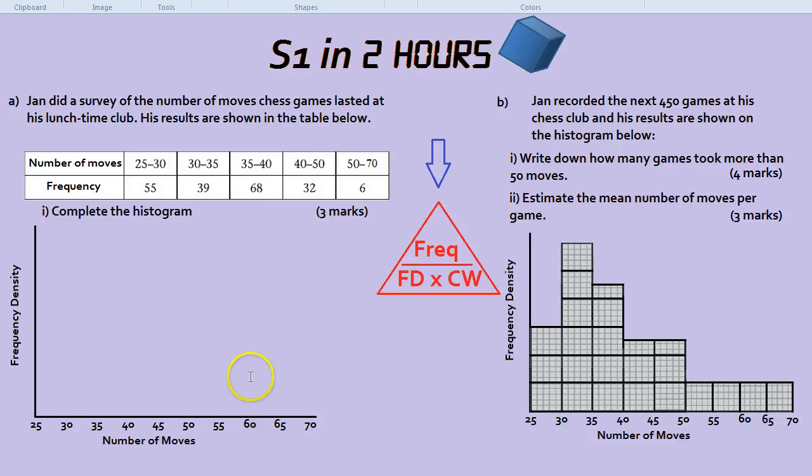So let's see how that would work. If we cover up frequency density, what do we have to do with the triangle? If we cover it up, we're left with frequency divided by class width. So let's work it out.